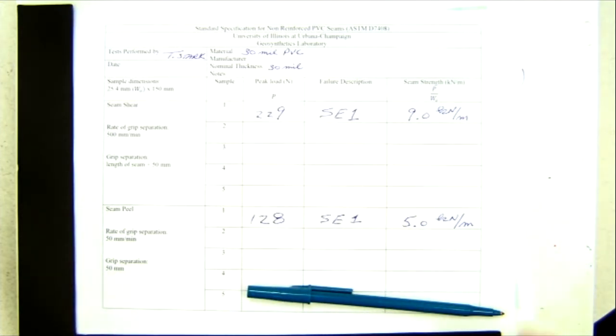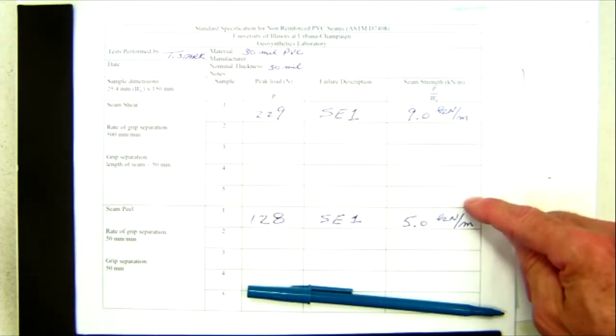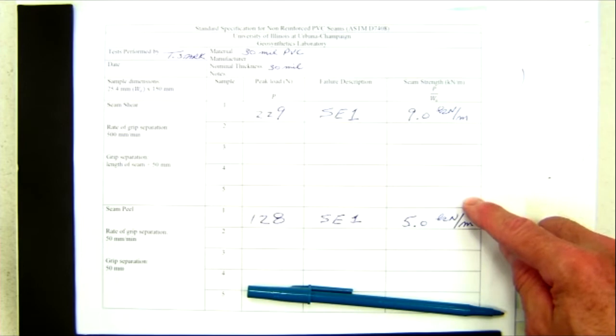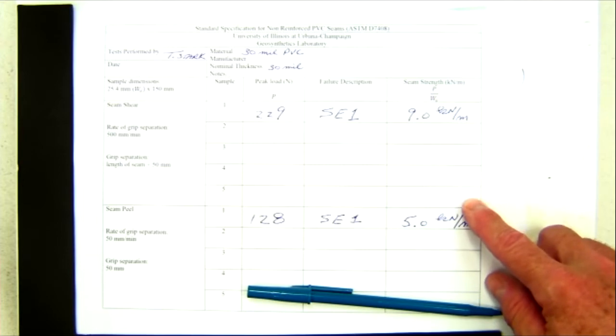That test is repeated four more times. And the average of those five shear strengths is reported as the seam shear strength. That average is compared to project specifications to see if the seam passed the project requirements.